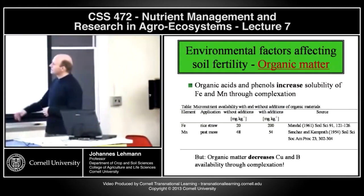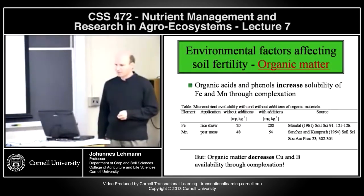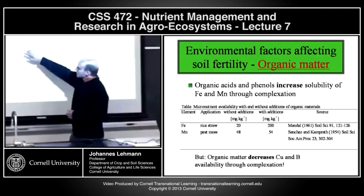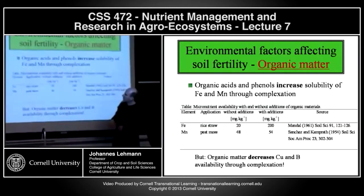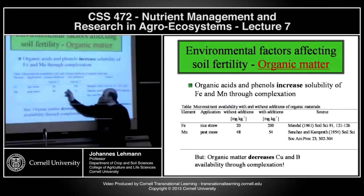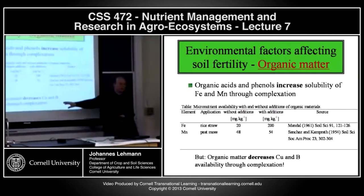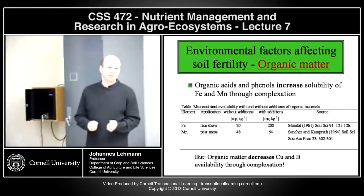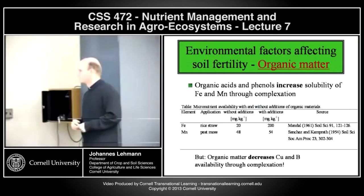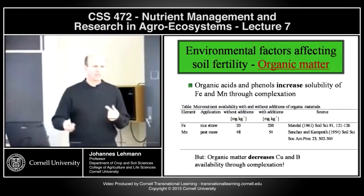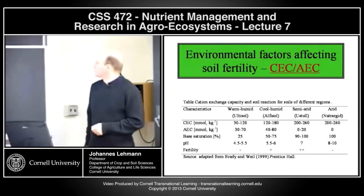Less well-known is that organic matter can also increase the availability of micronutrients, often through complexation. Here are two examples for iron and manganese: application of rice straw and peat moss increased iron availability by one order of magnitude; for manganese the increase was less pronounced. However, copper is one element where higher organic matter actually decreases availability. A common problem when converting peat or high organic matter soils into agricultural soils is copper limitation.